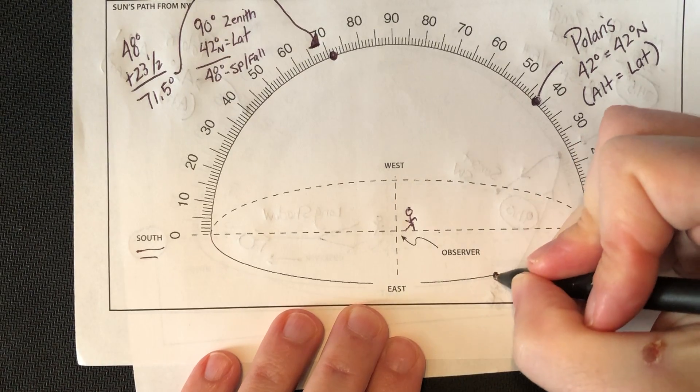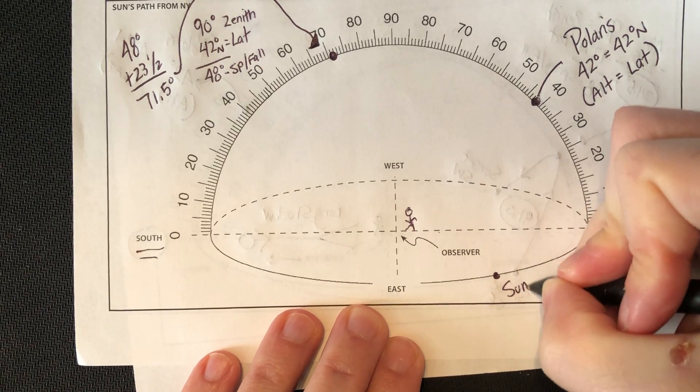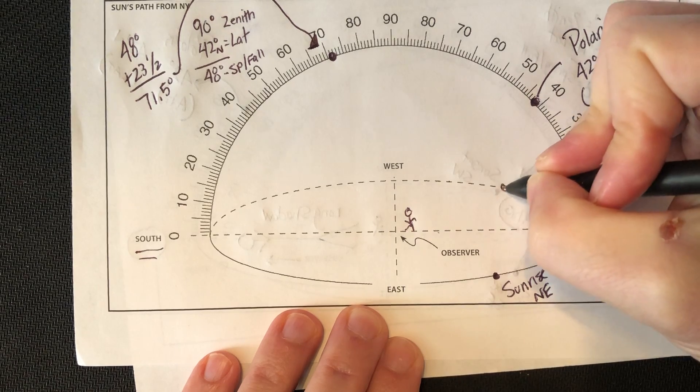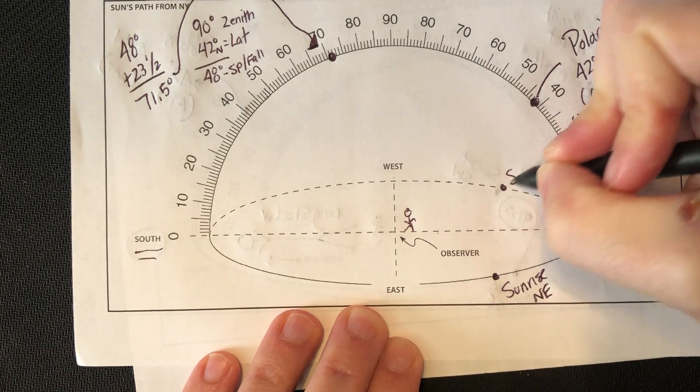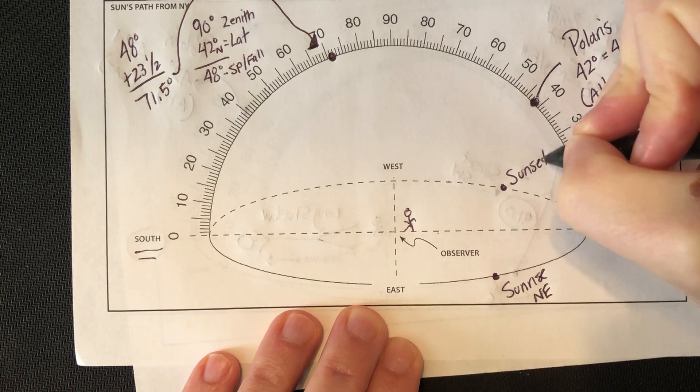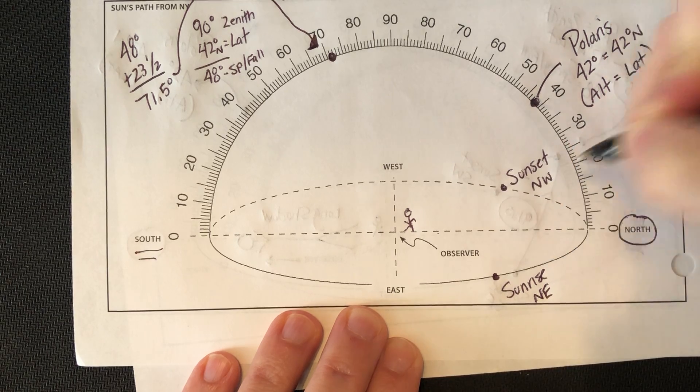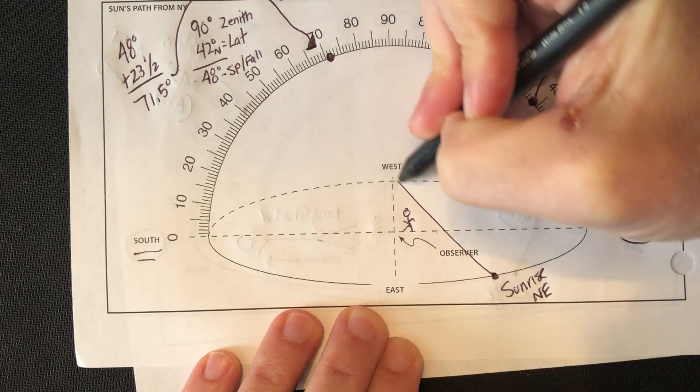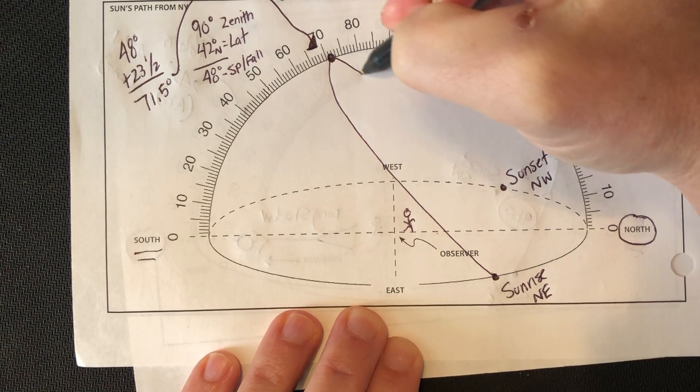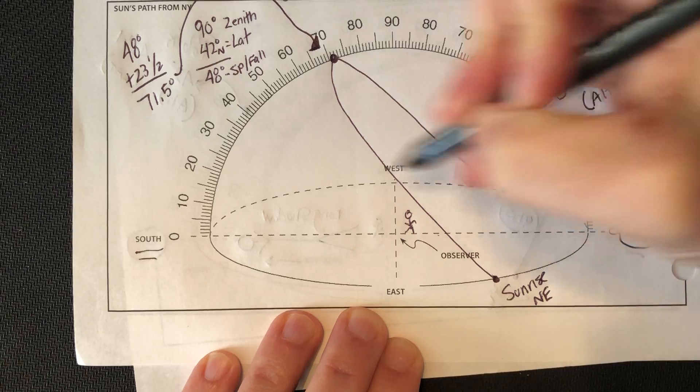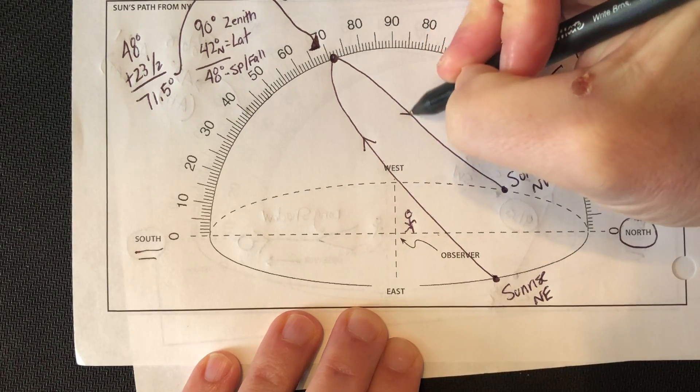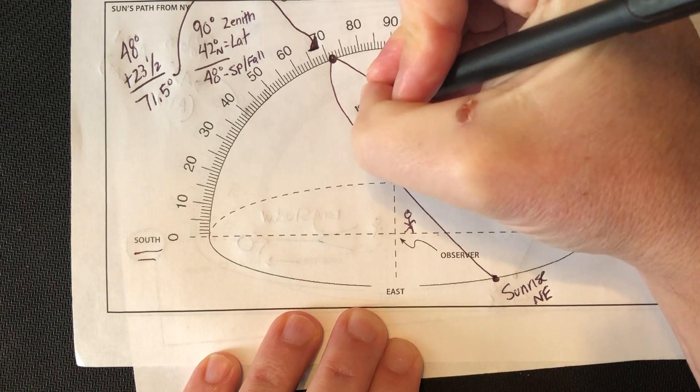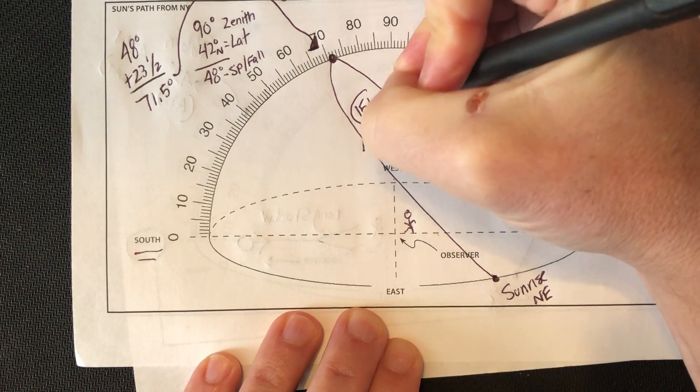In summer, it's going to have sunrise in the northeast, it's going to set in the northwest. Now, I connect sunrise all the way up to my altitude of the noon sun, all the way down to sunset. Sunrise, sunset. There's my noon sun. This is 15 hours of daylight.